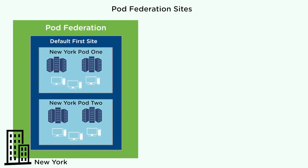When you initialize the CloudPod architecture feature, all the pods are placed into a single site called default first site. A site is a collection of well-connected pods in the same location, typically in a single data center. The pod federation in this example contains one site in New York which contains two pods.